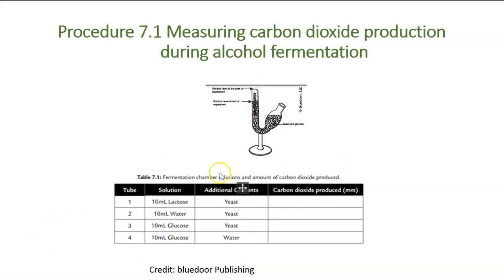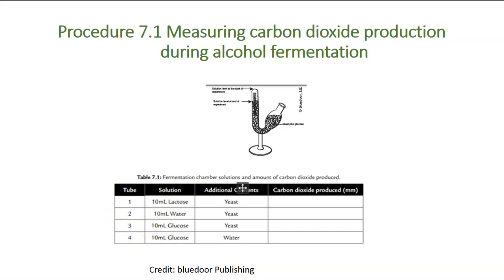There are also some controls. For example, in the last test tube, you put glucose and water but no yeast — you should already be able to anticipate what will happen with carbon dioxide production in that fermentation chamber. Once the chambers are prepared, there's an incubation period. After that, students remove the fermentation chambers from a water bath — we use the water bath to speed up the chemical reaction — and measure how much carbon dioxide has been produced in the arm, then compare results across chambers.